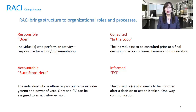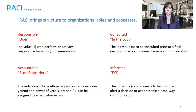To recap: Responsible is the doer — the individual or individuals who perform an activity and are responsible for action or implementation. Accountable — the buck stops here. This is the individual who is ultimately accountable, has the yes or no, and the power of the veto. Only one A can be assigned to an activity or decision. Consulted — in the loop. This is the individual or individuals to be consulted prior to a final decision or action being taken; it is a two-way communication. Informed — for your information. The individual or individuals who need to be informed after a decision or action is taken; it's a one-way communication.